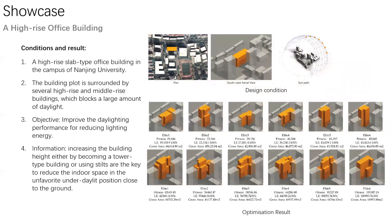I will use two case studies to demonstrate how this toolkit can be useful in the architecture design process. The first case study is a high-rise office building at Nanjing University. The objective of the optimization is to improve the daylighting performance and reduce lighting energy. We respectively used the subtractive and additive generative models to run the optimization process. The optimization result, as shown in this slide, basically reflects one major strategy: to elevate the overall massing so that the target building is freed from the shadow cast by surrounding buildings and increases the portion of indoor space with better access to natural daylight.